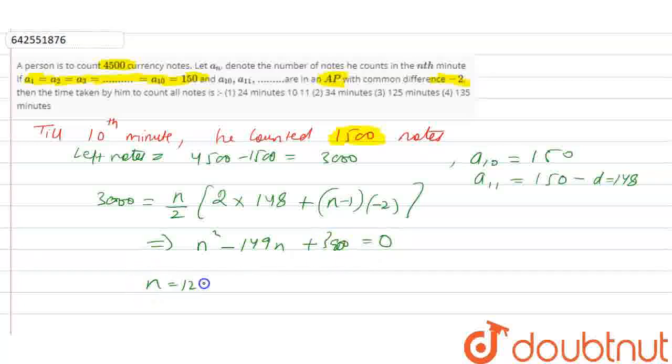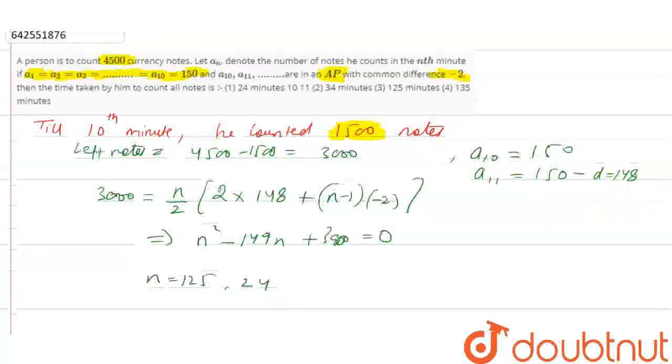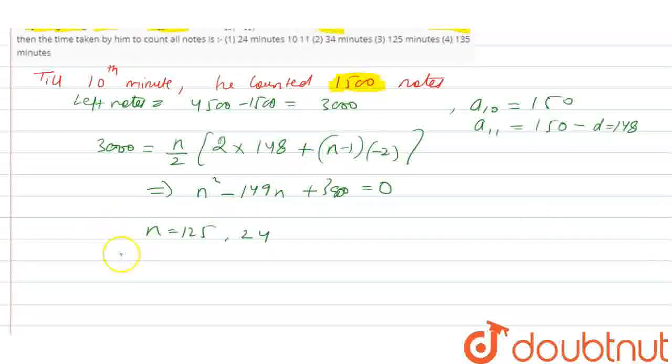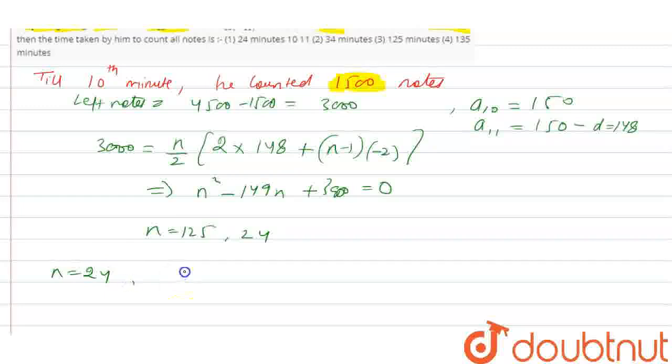N is equal to 125 comma 24. As we cannot take 125 because it is not possible, so N is equal to 24.